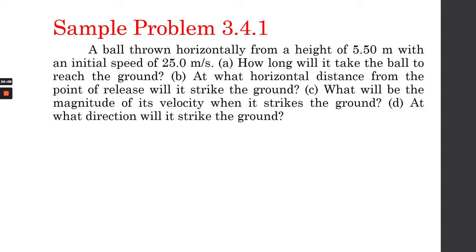Let's have an example problem and see how we use these equations to solve projectile motion. A ball is thrown horizontally from a height of 5.5 meters with an initial speed of 25 meters per second. Questions: (a) How long will it take the ball to reach the ground? (b) At what horizontal distance from the point of release will it strike the ground? (c) What will be the magnitude of its velocity when it strikes the ground? (d) At what direction will it strike the ground?